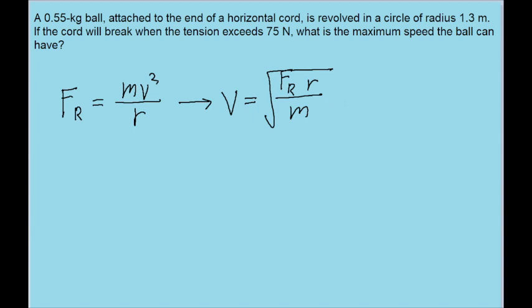Now all we have to do is plug in the values given to us in the problem: 75 newtons for F sub r, 1.3 meters for the radius, and 0.55 kilograms for the mass. If we do that, we find a speed of about 13 meters per second. So that's the answer to this problem.